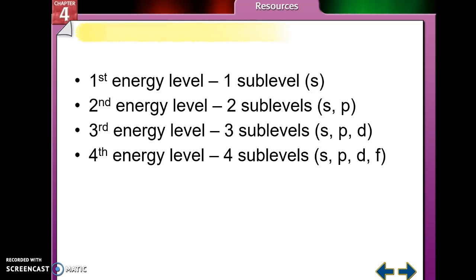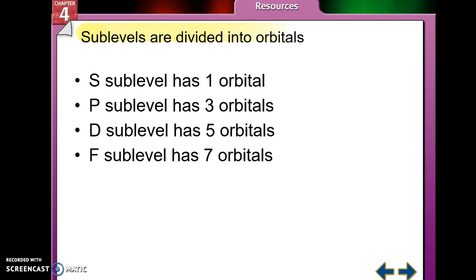Each of these sub-levels exists independently on that energy level. One thing to remember is that sub-levels are divided into orbitals. The S sub-level has one orbital, the P sub-level has three orbitals, the D sub-level has five orbitals, and the F sub-level has seven orbitals.